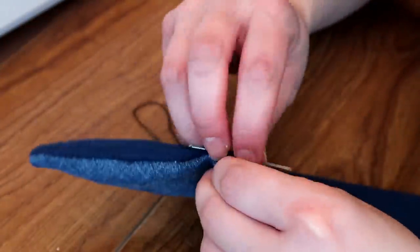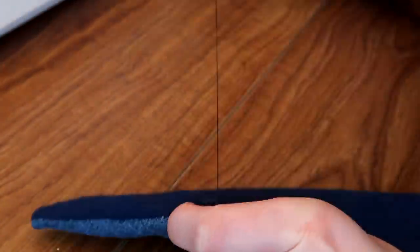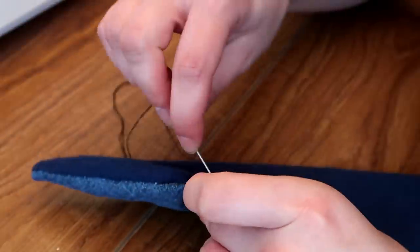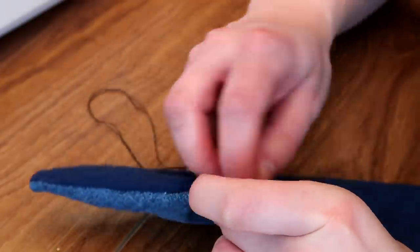Next we're going to take a needle and thread and do a ladder stitch, sometimes known as a blind or invisible stitch, and close up this gap. Once again I will leave a tutorial below if you're not too familiar with this stitch.